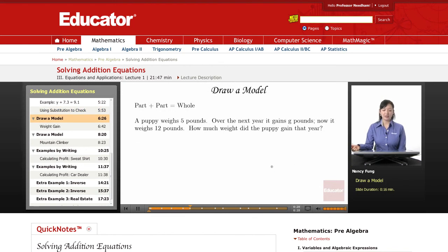Let's try drawing a model. Sometimes that might help you understand how to set up your equation if you're writing a word problem. And the idea for the model is that a part plus a part will give you the whole. Let's look at this example and draw a model for it. A puppy weighs 5 pounds. Over the next year, it gains g pounds. Now it weighs 12 pounds. How much weight did the puppy gain that year?